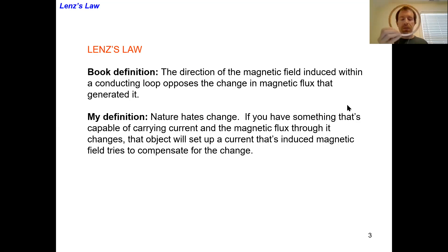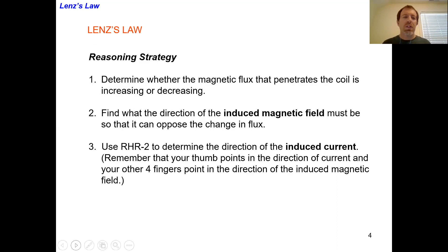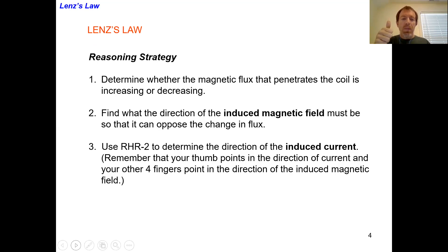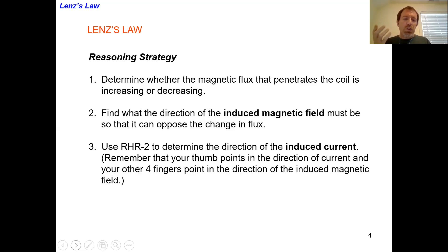Here's the reasoning strategy for Lenz's Law. First, determine whether the magnetic flux is increasing or decreasing. Second, find the direction the induced magnetic field must be in order to oppose that change in flux. Third, use the right-hand rule to determine the direction of the induced current.